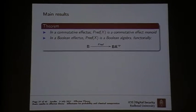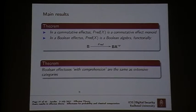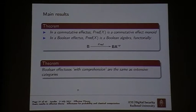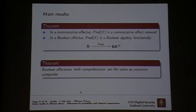Boolean effectuses with comprehension can be shown to be essentially the same as extensive categories — very basic structures in category theory with certain well-behaved coproduct properties. It's pleasing that two totally different notions can be related via this abstract setting.